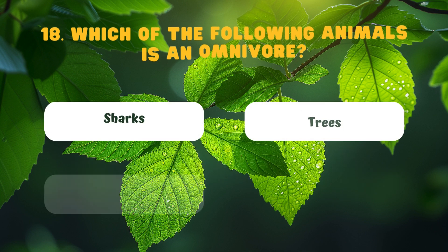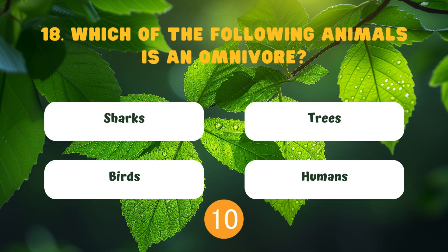Which of the following animals is an omnivore? Sharks. Trees. Birds. Humans.